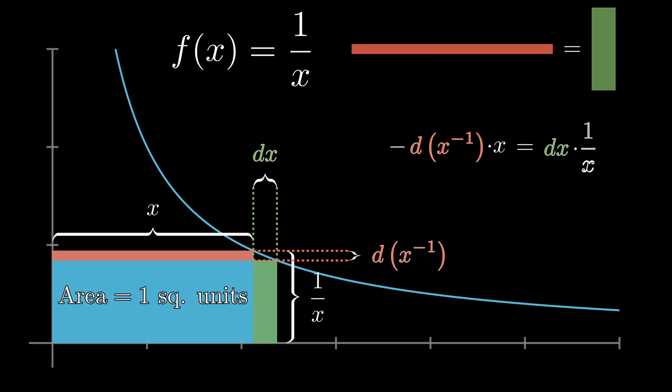But is this really a geometrical proof? Can we get the derivative of 1 by x without resorting to the idea of infinitesimals?